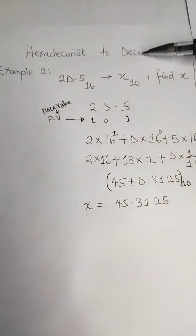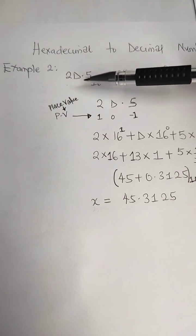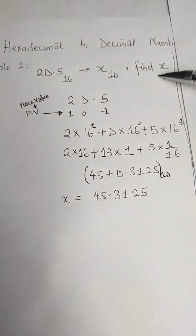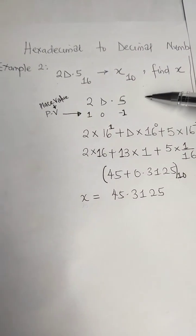Today we want to convert hexadecimal to decimal. We have this example: 2D.5 in hexadecimal form. To convert to decimal, we are asked to find x. All you have to do is expand this value 2D.5.